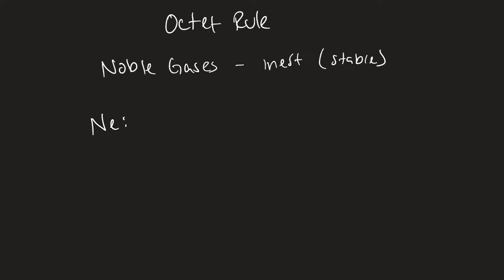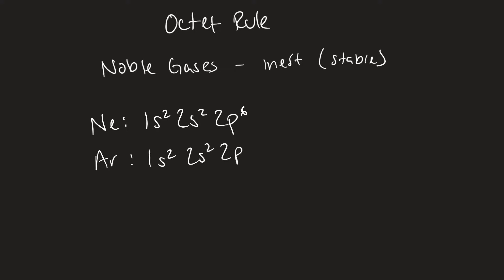Let's look at neon, for example. The reason why it doesn't react with anything is because of its electron configuration. When you look at neon or any noble gas — let's compare argon as well — you see that it has a full valence shell that consists of eight electrons.